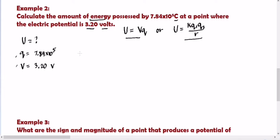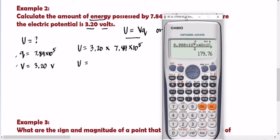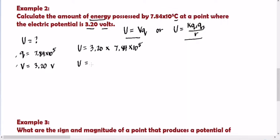Let's proceed with computation. U equals V times Q, which is 3.20 times 7.84 times 10 raised to 5. That is equal to 2,508,800. Since ang hinahanap natin ay energy — electric potential energy — the unit must be joules. So our final answer is 2,508,800 joules.